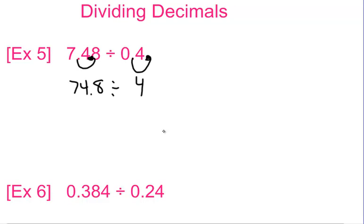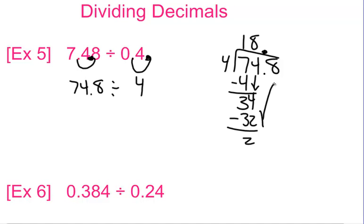Again, just move the decimal over once to the right for the second number. Because this needs to be a whole number. Then we just multiply like we typically do. Seventy-four point eight divided by four. Now, we already have the decimal there, so I'm going to put it up there. Four goes into seven once. One times four is four. Subtract, we get three. Four can't go into three. Bring down a four. Four goes into thirty-four eight times. Eight times four is thirty-two. Subtract, we get a two. Bring down the eight. Four goes into twenty-eight seven times. Seven times four is twenty-eight. Subtract, we get zero. So it's eighteen point seven.